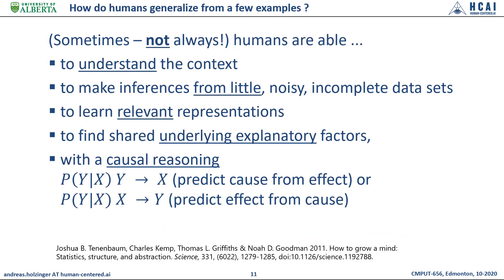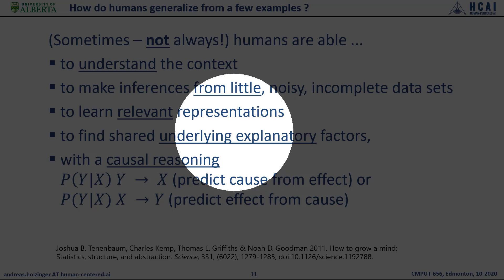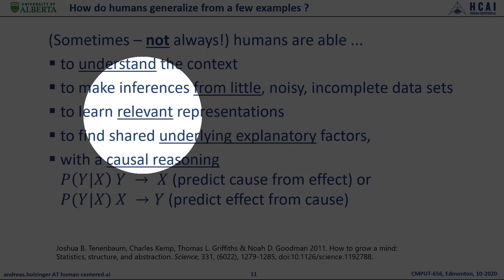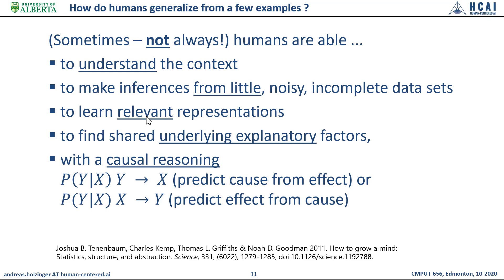How do humans generalize from a few examples? Sometimes — and I emphasize not always — humans are able to understand the context, make inferences from noisy or incomplete data sets, and learn relevant representations. What is relevant is really a hard question. And then to find these shared underlying explanatory factors across modalities, in particular between p(y|x) with the causal link between y mapped to x — for example, predict cause from effect — or x mapped to y, predict effect from cause.